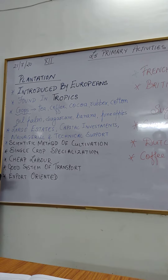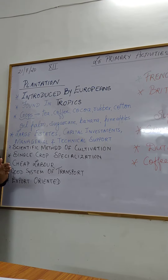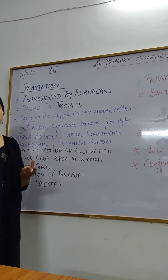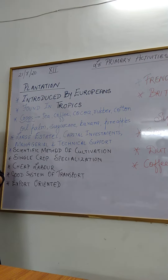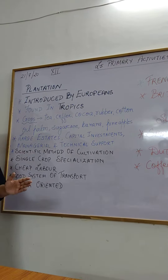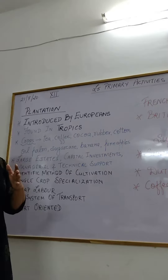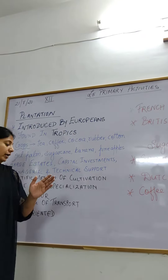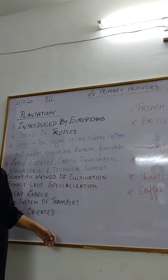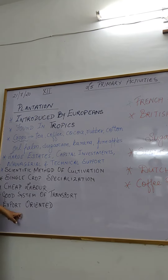Then cheap labor - such large estates require a lot of labor or workforce, and that workforce needs to be paid very less. The salaries or wages they get should be of a low amount. Then a good transport network is required. From growing of a crop till packaging, managing, and the product reaching the market and retail stores, the transport system should be good. The production should be export oriented - the product which is being sold out should be of export quality.